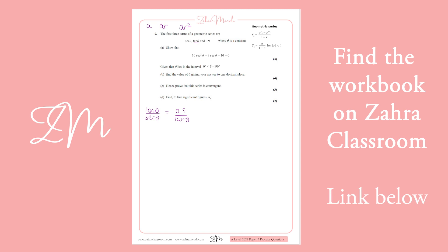So let's solve this. We're going to multiply that up — that gives us tan squared theta equals 0.9 sec theta. And tan squared — we know that 1 plus tan squared from our identities equals sec squared. So now what we're going to do is we want tan squared, which is sec squared theta minus 1. That equals 0.9 sec theta.